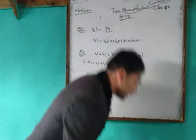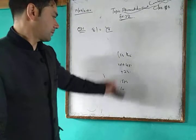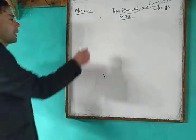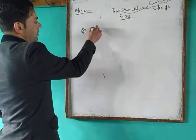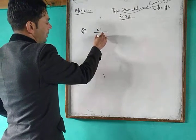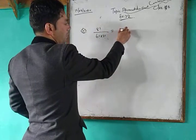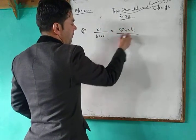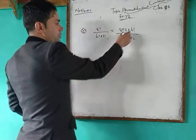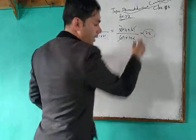Question number 3: Compute 8 factorial divided by 6 factorial into 2 factorial. We write out 8! divided by (6! × 2!). Expanding, 2! = 2 × 1 = 2, and we simplify step by step to get the result.